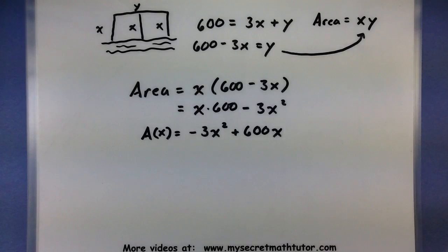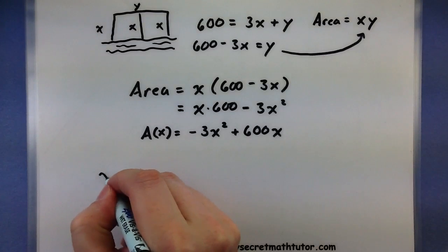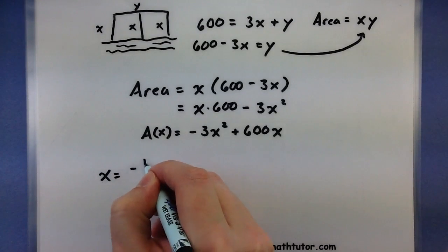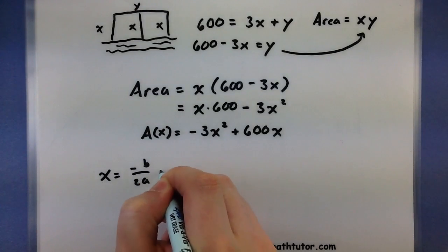Alright. So from my given conditions, I've set up a quadratic function here. Now what we want to do is figure out where's the maximum area, or where's the maximum of this quadratic function. So we'll use x equals negative b all over 2a to find out.